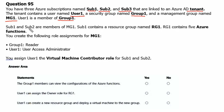Subscription1 and Subscription2 are members of Management Group1. Subscription1 contains a resource group named RG1, which contains five Azure functions.